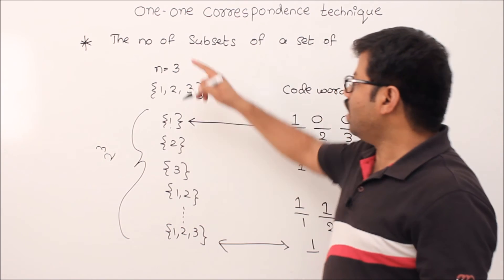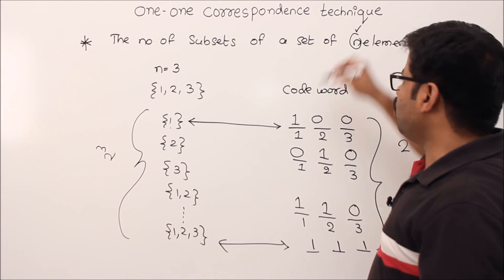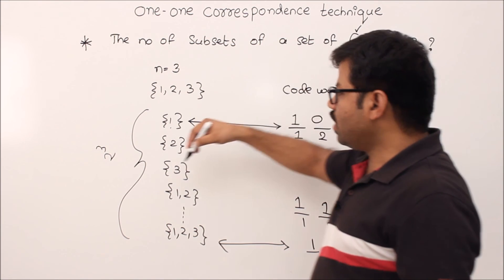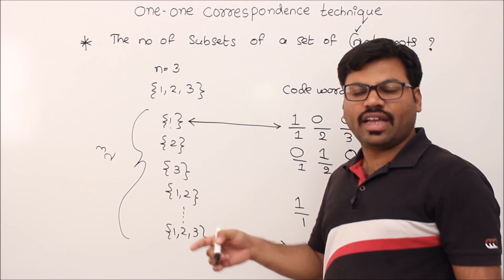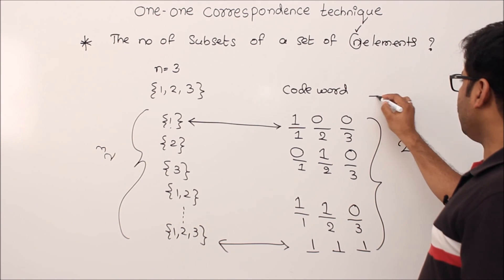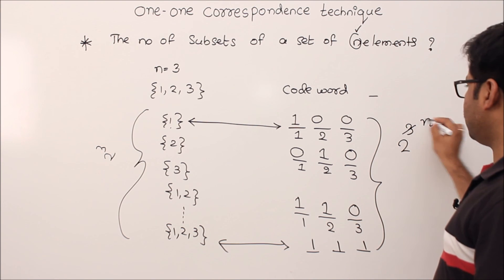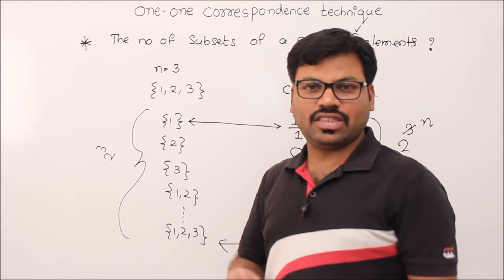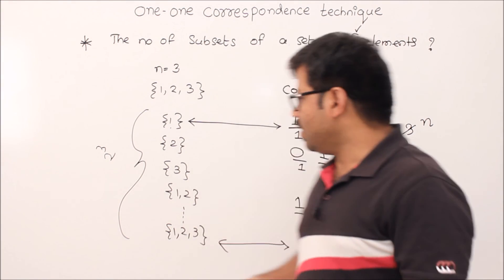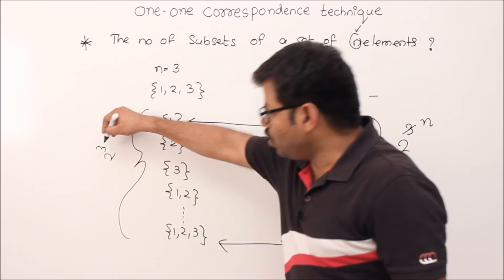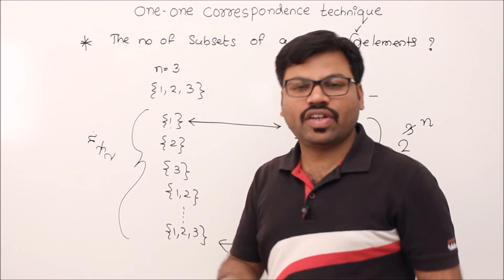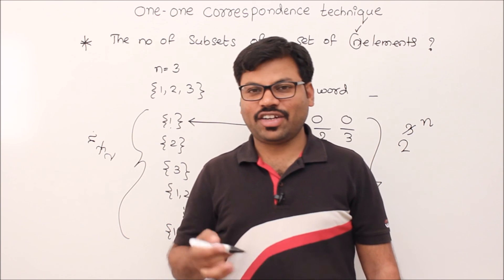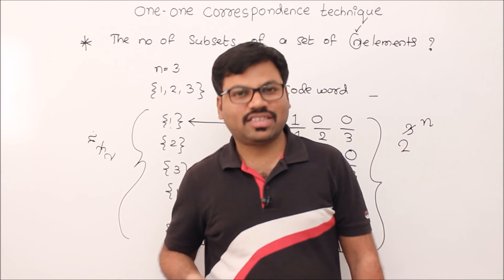In general, when we have n elements, the positions become 1, 2, 3, ..., n. The number of subsets is unknown, but the number of codewords is 2^n because you have n positions and binary sequences. How many binary sequences are possible with n positions? 2^n. Then the number of subsets is also 2^n. In that way we can effectively use the one-to-one correspondence technique to solve problems. Keep solving problems related to this technique so that you can master it.